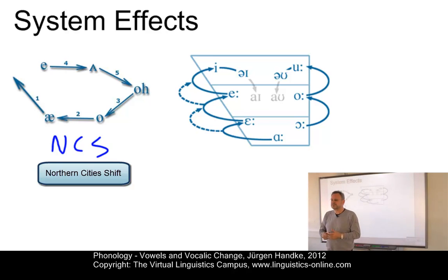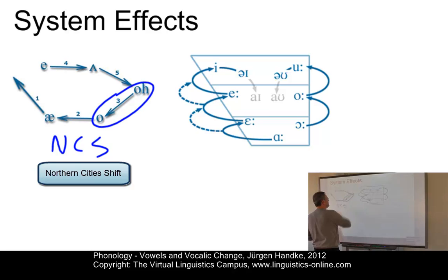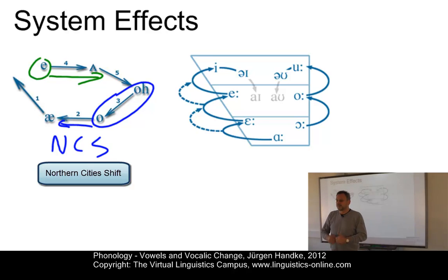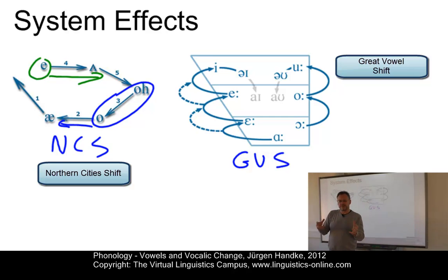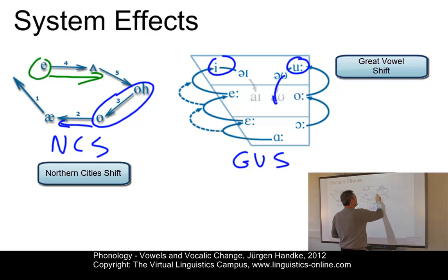The result of the Northern Cities Shift is that each of a series of vowels receives a new place of articulation along the parameters of tongue advancement (front-back) or tongue height. The low vowels are advanced — they move to the front — and the high and mid vowels are retracted. The most well-known system effect in the history of English is the Great Vowel Shift (GVS). Roughly between 1350 and 1550, five of the seven long monophthongs of Middle English were raised, and the two top ones were diphthongized.